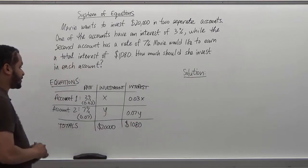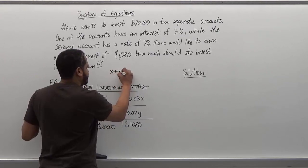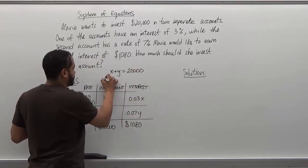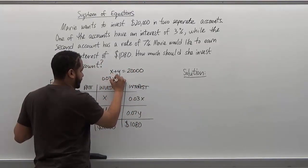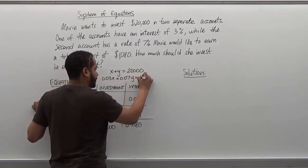So here we have the system of equations. We're looking at it directly. So we have x plus y equals $20,000. And then we have 0.03x plus 0.07y equals $1,080.